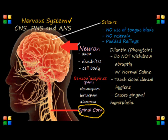When we talk about the autonomic nervous system, we are talking basically about the sympathetic, or the fight-or-flight system, or the parasympathetic system.